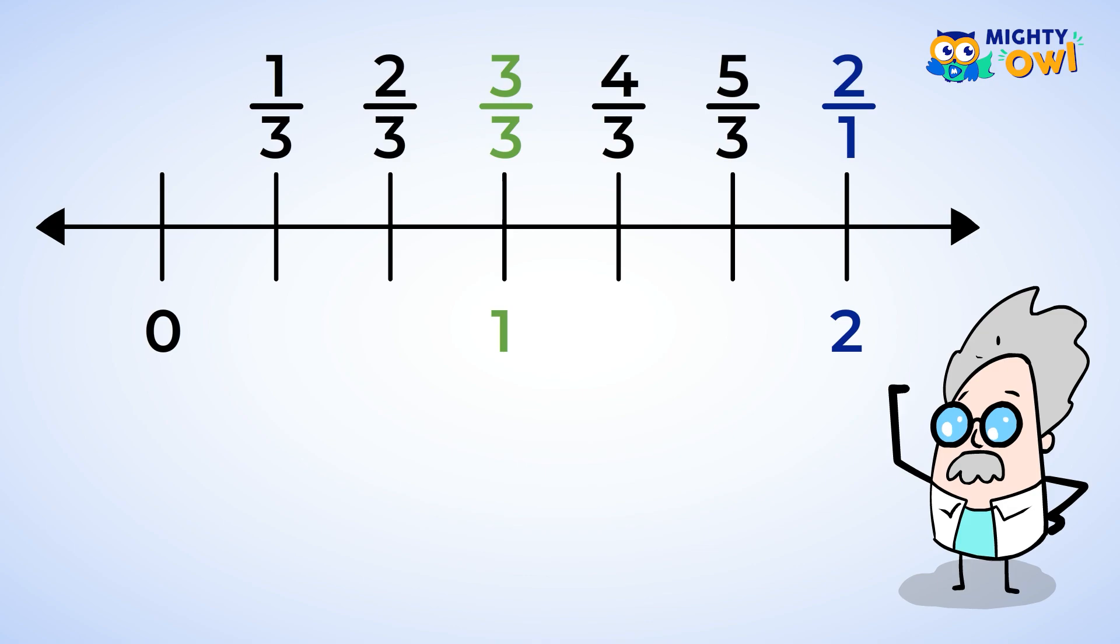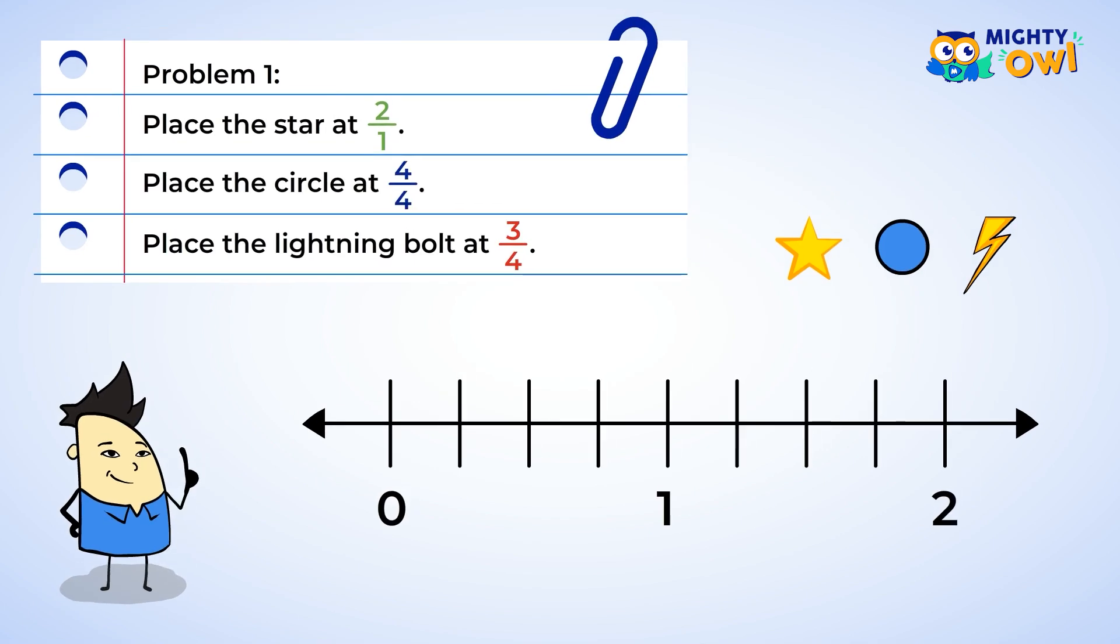Let's try some practice. Here we have a number line, and we need to place these shapes at certain numbers. Let's get started! We need to place the star at two over one. This is the same as two. Perfect!